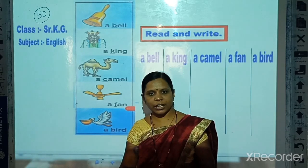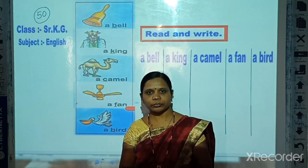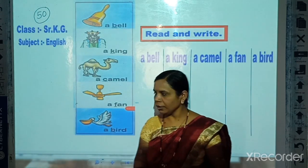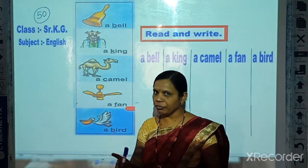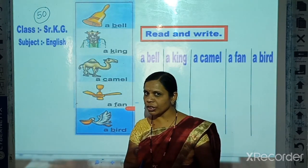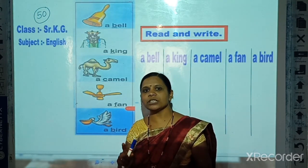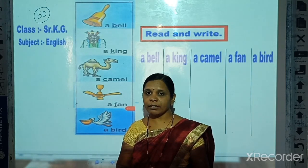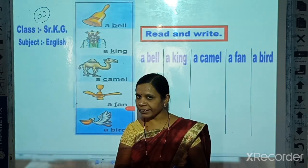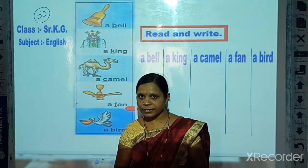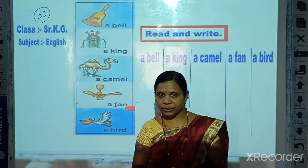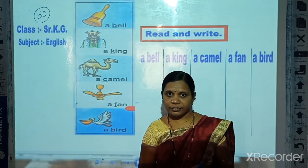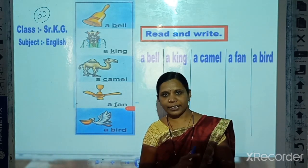When we use A — if the object name begins with a consonant, we use A. Like: a bag, a cat, a camel, a bag — like this.